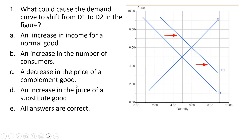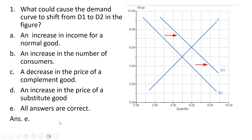Here are the answer choices: an increase in income for a normal good, an increase in the number of consumers, a decrease in the price of a complement good, an increase in the price of a substitute good, or E, all answers are correct. The correct answer here is E, all answers are correct.